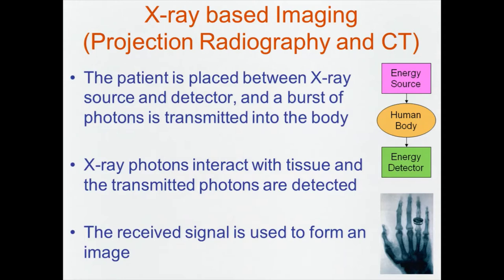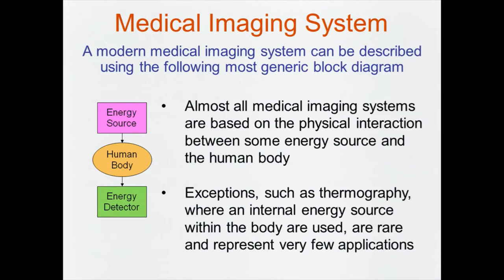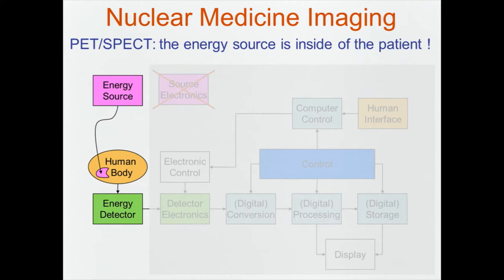We have an energy source that has to interact with the tissue, then we detect it. A very simple analogy is X-ray imaging, where we take the patient, put it between source and detector, transmit X-ray photons, they interact with tissue, we detect the transmitted photons, and form images. All imaging modalities follow that — whether ultrasound or optics — there will be some physical interaction between energy and the tissue. There are exceptions such as thermography, which uses internal energy of the body. One interesting discovery: PET does not follow that. In nuclear medicine, we take the energy source and put it inside of the patient. Consequences of that are tremendous.